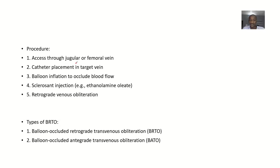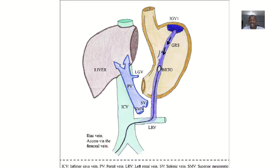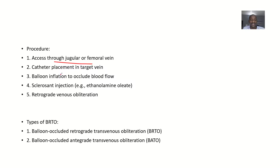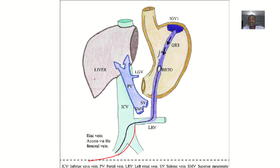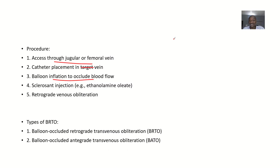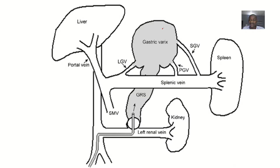So what is the procedure? First of all, you gain access through the jugular vein or the femoral vein — femoral access is coming from down, and jugular access is coming from the neck. The catheter will be placed into the vein, the balloon will then be inflated to occlude or block blood flow. If you block this place, blood will not be flowing through it, because this vein is under danger of becoming ruptured. So you are basically trying to block blood flow to it. Next, you inject the sclerosant, then there'll be retrograde venous obliteration, meaning blood will not be able to flow through that vein again, which reduces the risk of that vein actually rupturing.